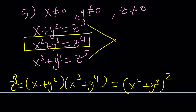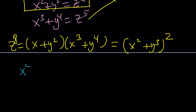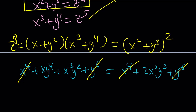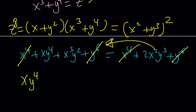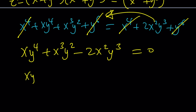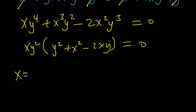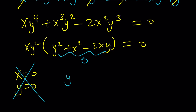When we expand and distribute everything, the left side gives x to the fourth plus x·y to the fourth plus x cubed·y squared plus y to the sixth, and the right side gives x to the fourth plus two·x squared·y cubed plus y to the sixth. The x to the fourth and y to the sixth cancel out. Putting everything on one side: x·y to the fourth plus x cubed·y squared minus two·x squared·y cubed equals zero. Factoring out x·y squared gives y squared plus x squared minus two·x·y, which is a perfect square. So we get x·y squared times (y minus x) squared equals zero. Since x and y are both nonzero, this implies y equals x.